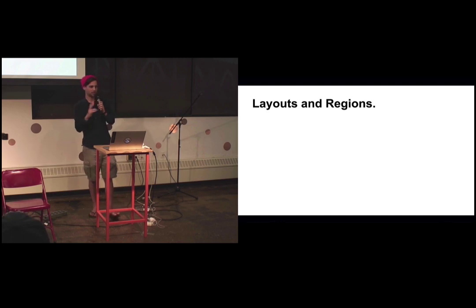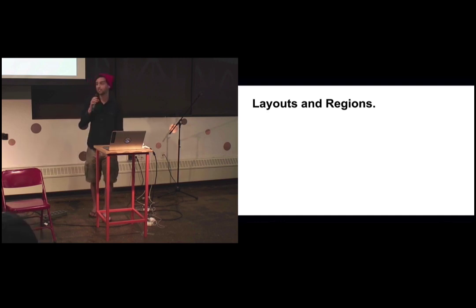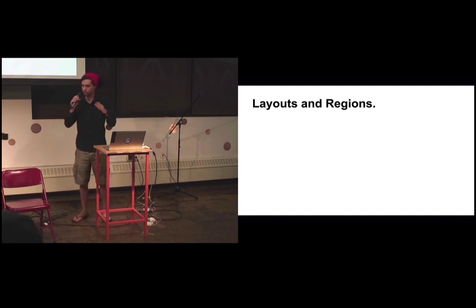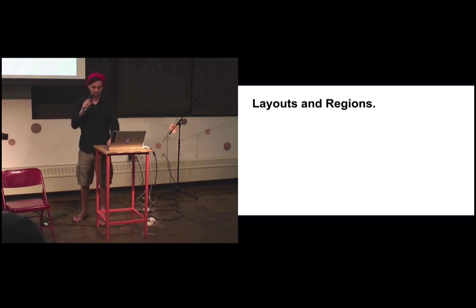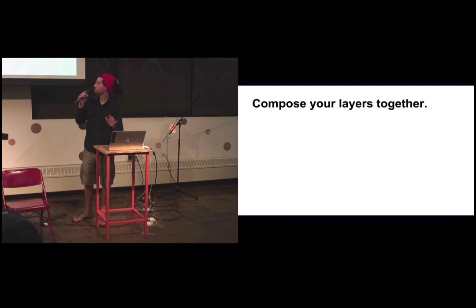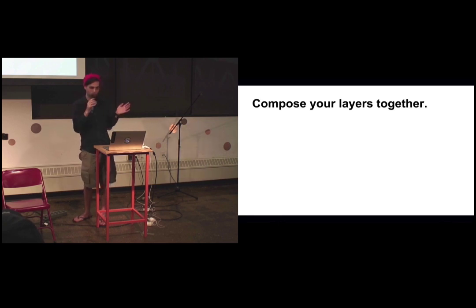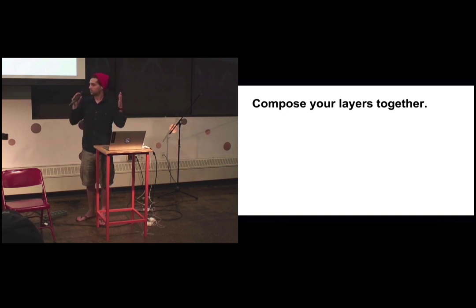There are two pieces in Marionette that are going to make your life a lot easier, and they're going to talk to each other and work together — layouts and regions. As you've heard from multiple people, we're going to compose multiple elements together. They come together and everything gets a lot easier.